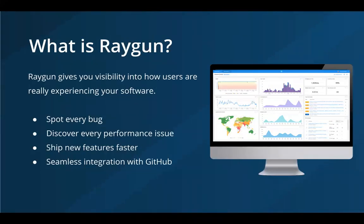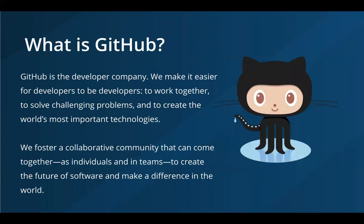Raygun offers a suite of products that monitor your web and mobile applications. When errors, crashes, and performance issues affect users, they give developers all the diagnostic details they need to fix them with greater speed and accuracy. For those who don't know GitHub, it's the world's largest developer collaboration and code management platform — where most of the world's open source code lives. There are 41 million developers collaborating on a daily basis. It also extends into commercial collaboration around code as well.